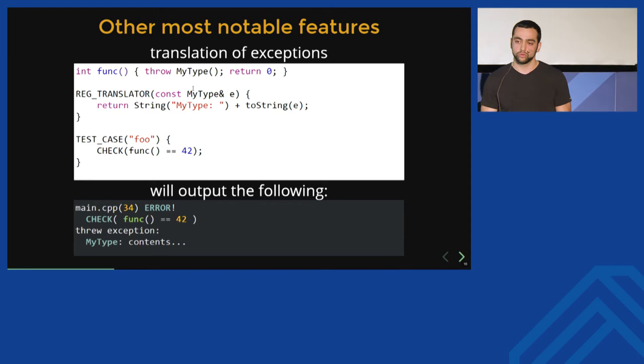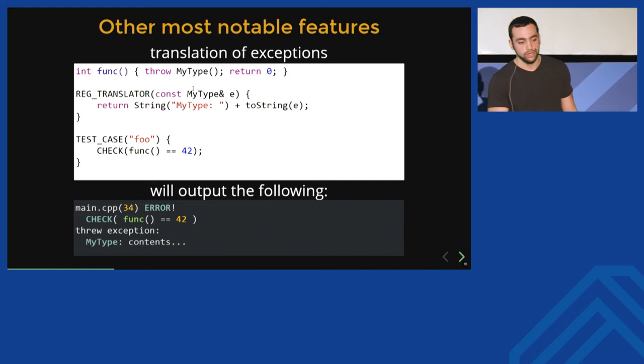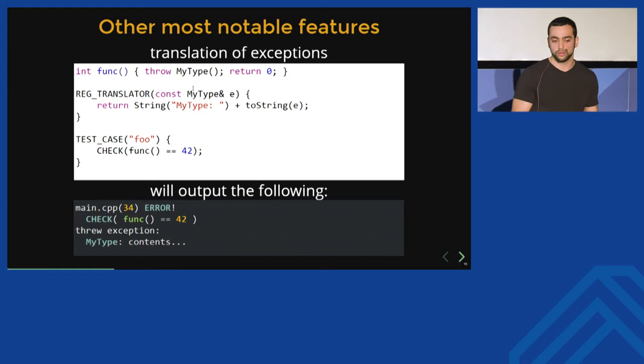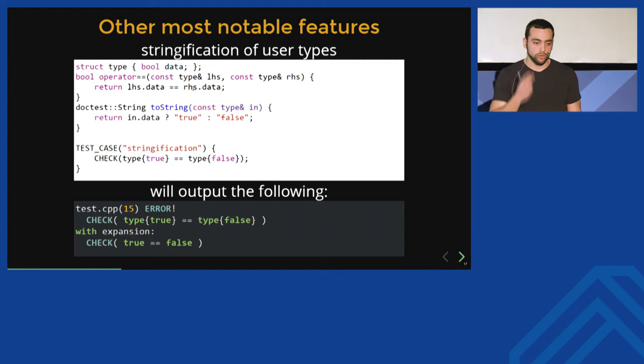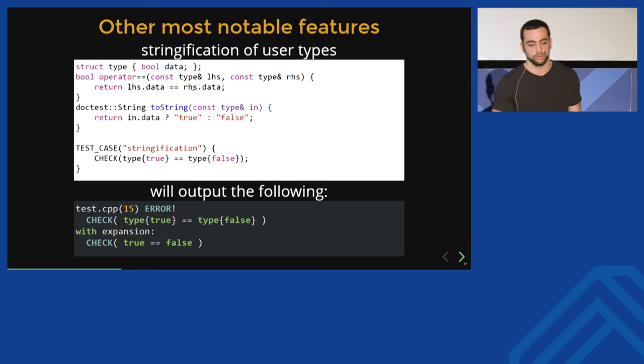You can teach the framework how to translate your exception types. When we have a function which throws and we use it in an assertion, we'll get a string representation of our exception. You can also teach the framework how to stringify your types, because when two values are not equal, you would like to see their string representation in the output.